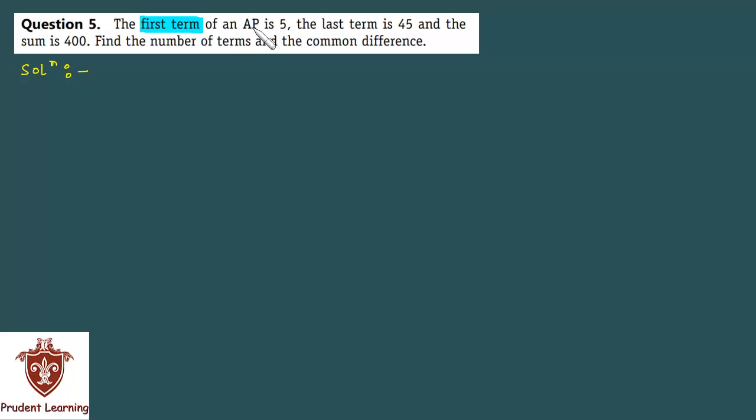The first term of an AP is 5, the last term is 45, and the sum is 400. We have to find the number of terms and the common difference. Let us see the solution. We are given first term of the AP is 5 and last term of the AP is 45, and also we are given that sum is equal to 400. With this information, we have to find number of terms and common difference.